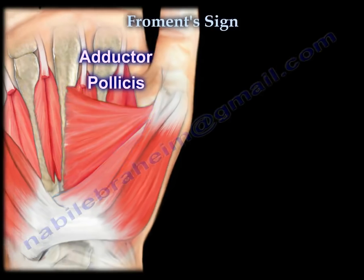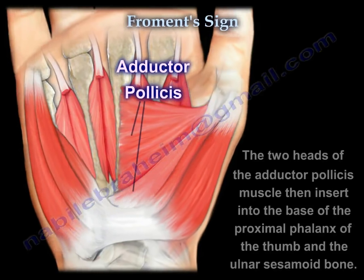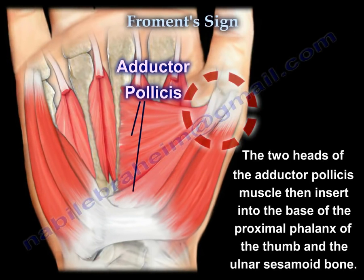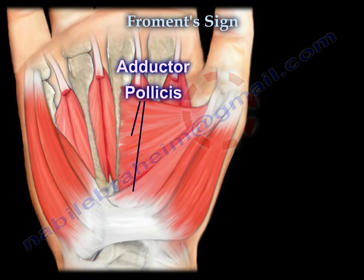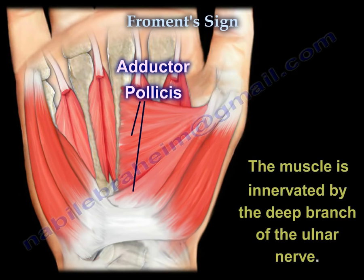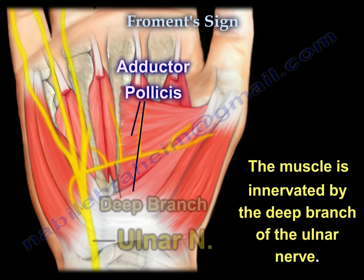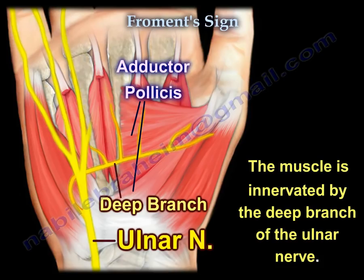The two heads of the adductor pollicis muscle insert into the base of the proximal phalanx of the thumb and the ulnar sesamoid bone. The muscle is innervated by the deep branch of the ulnar nerve.